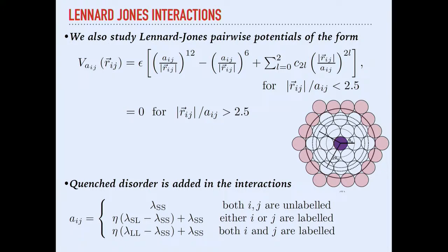Another model where we can derive exact results uses the Lennard-Jones interaction with a smoothness parameter — additional terms to smooth the potential at the interaction cutoff. There is a cutoff distance of 2.5 in this case. You can add quenched disorder by labeling particles as either small or large, creating near-crystalline configurations. These are protocols already well known in the literature.